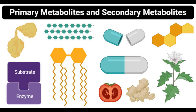Even though primary metabolites play an essential role in the growth and development of an individual, these do not have pharmacological actions or effects against other factors. The production of primary metabolites usually occurs at a high rate, as these are constantly required. These can also be extracted easily through simple extraction procedures.